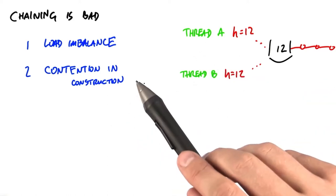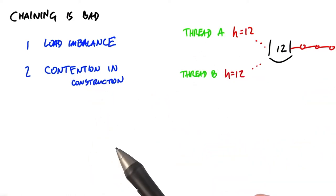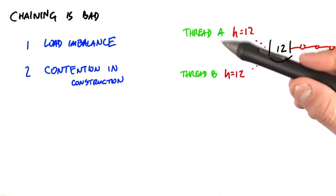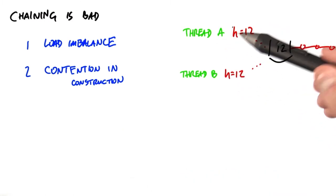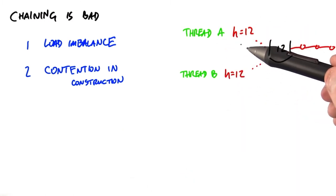The second disadvantage is in construction, particularly contention in the construction process. What we might have is two different items, each of which wants to place one item into the hash table.